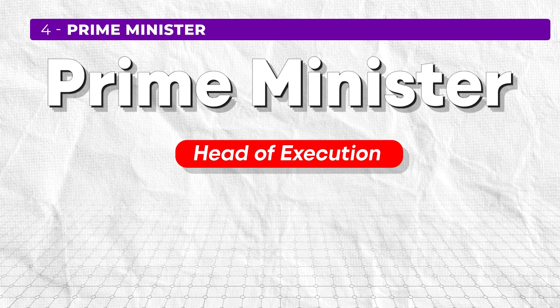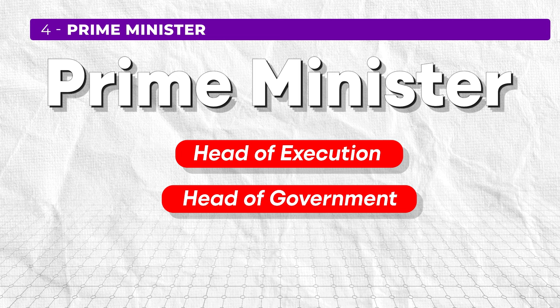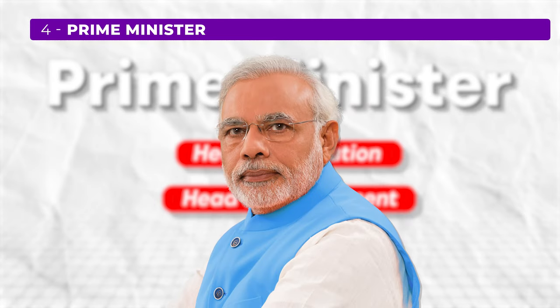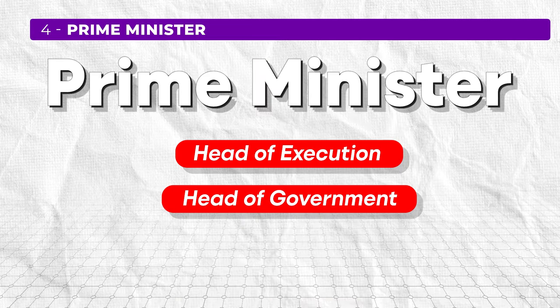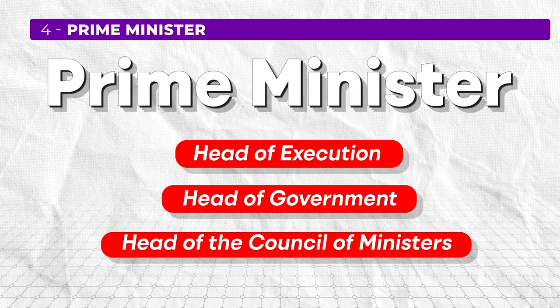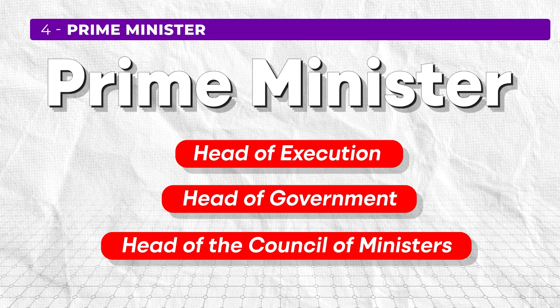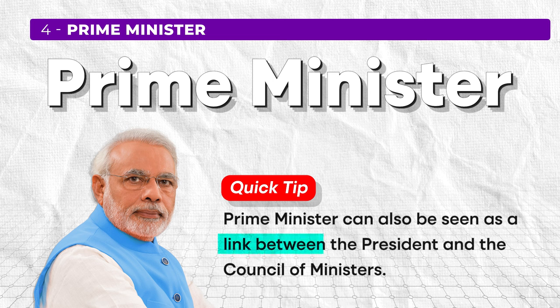The next important topic is the Prime Minister. He is said to be the head of the executive and also the head of the government, whereas the president is the head of the state. The Prime Minister serves many duties, the most important being to represent the country internationally — participating in international policy formulation and representing the country in international meetings. The Prime Minister is also the head of the council of ministers, which is the group that assists the Prime Minister in executing work and running the government. The Prime Minister acts as a link between the president and the council of ministers, so if the council needs to reach the president, they must go through the Prime Minister.